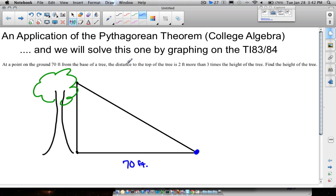It also says the distance to the top of the tree is two feet more than three times the height of the tree. What that's referring to is the distance from this point to the top of the tree is two feet more than three times the height of the tree.